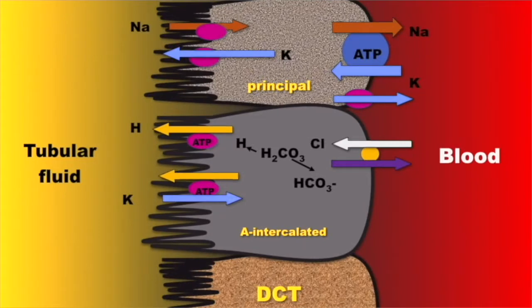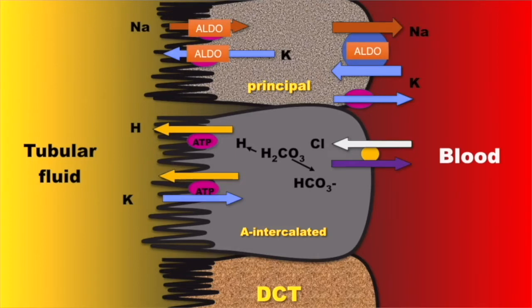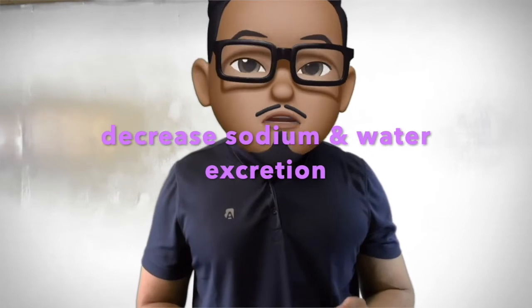The major stimulus for the release of aldosterone is hyperkalemia. Angiotensin 2 also acts as a major stimulus for its synthesis and release. Aldosterone acts on the distal tubule and collecting ducts, particularly the sodium-potassium ATPase pump, to enhance sodium absorption by epithelial sodium channels. It also causes the secretion of potassium and, to a lesser extent, hydrogen in exchange for sodium. Aldosterone therefore leads to the conservation of sodium and the excretion of potassium and hydrogen ions. In essence, the principal effect of the renin-angiotensin-aldosterone system is to decrease sodium and water excretion.